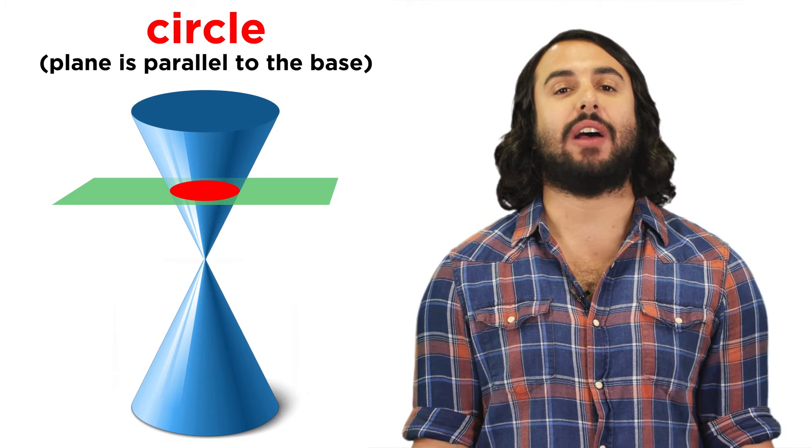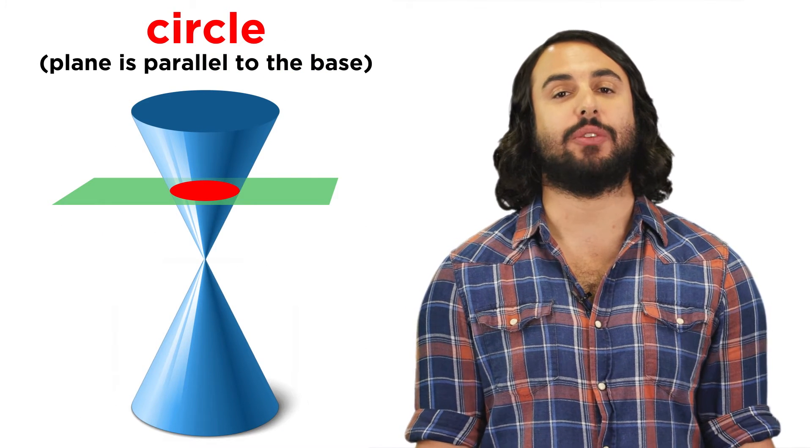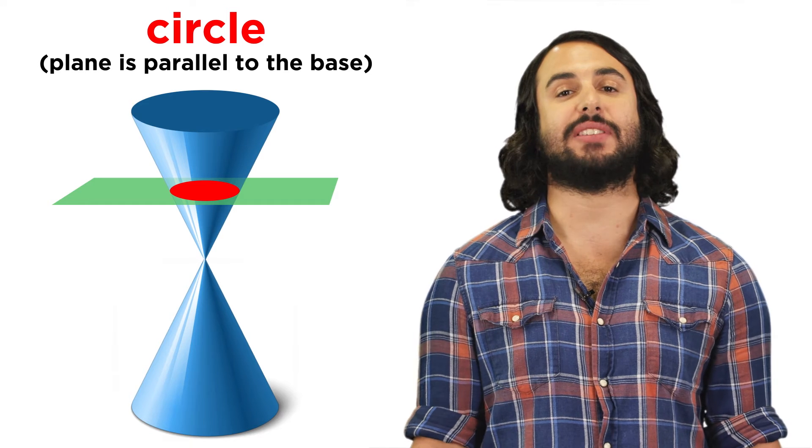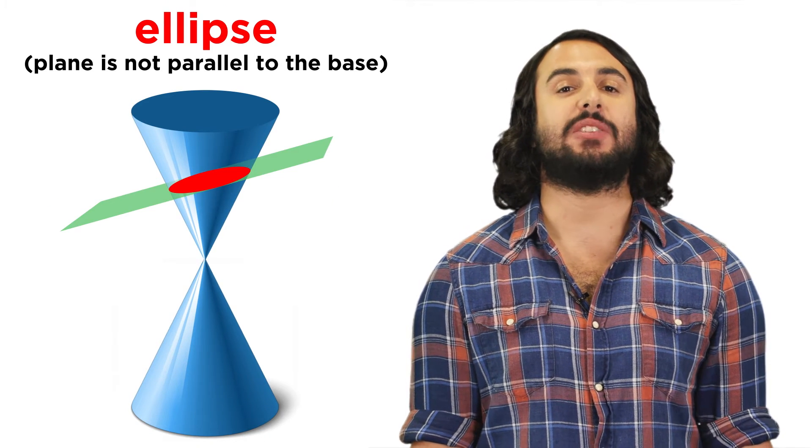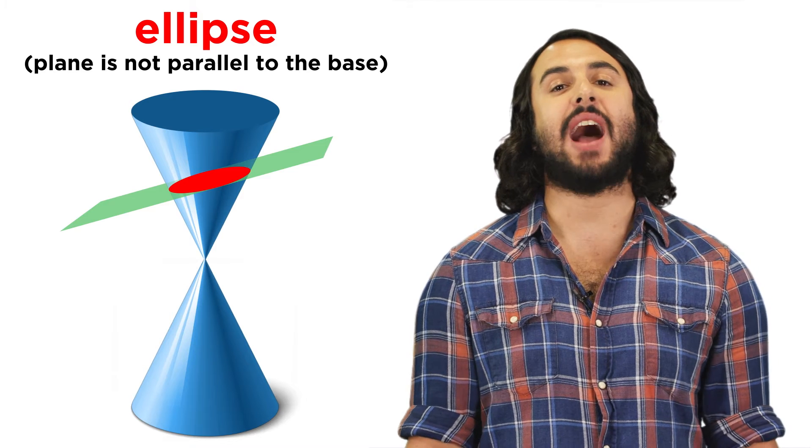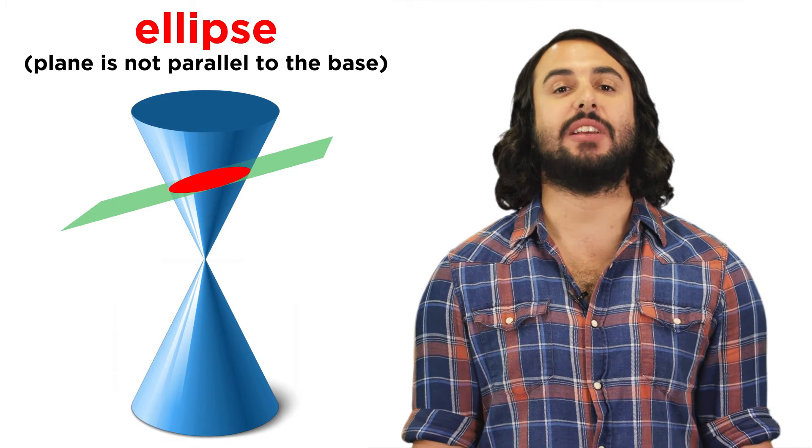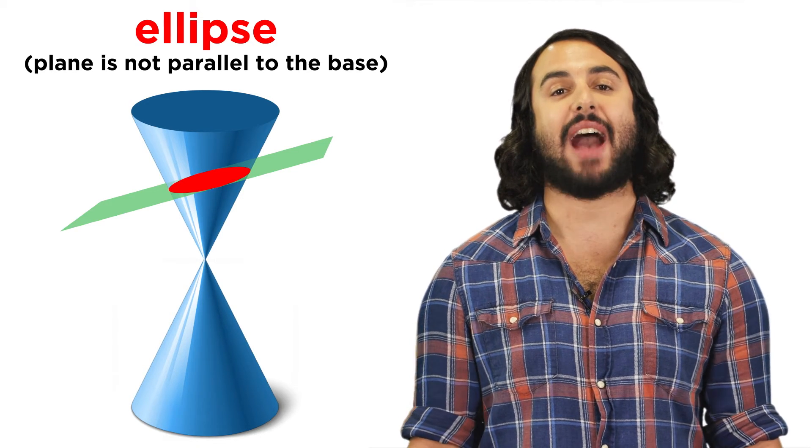Let's recall that while a circle is the conic section formed when a plane intersects this cone parallel to the base, an ellipse is what we get when this plane is not parallel to the base, but it still just intersects one half of the cone.